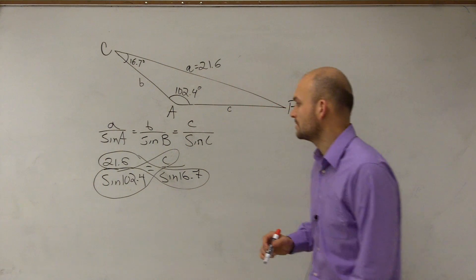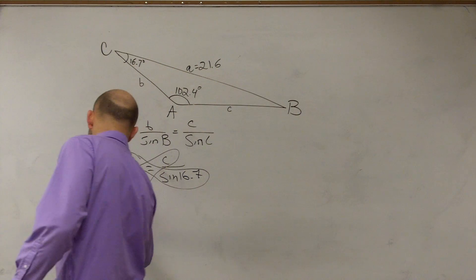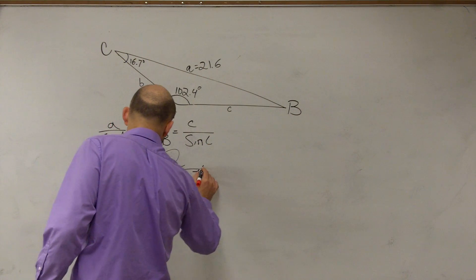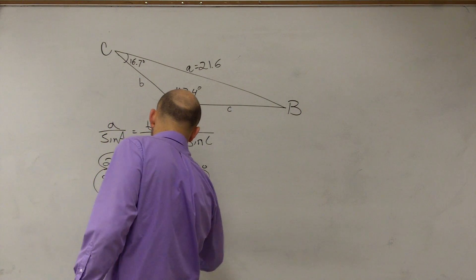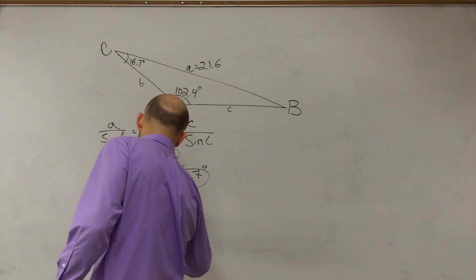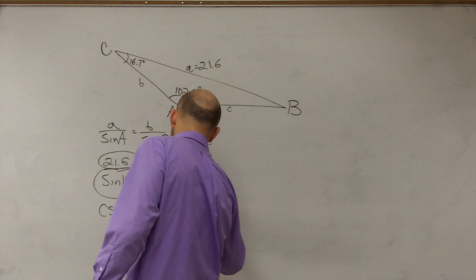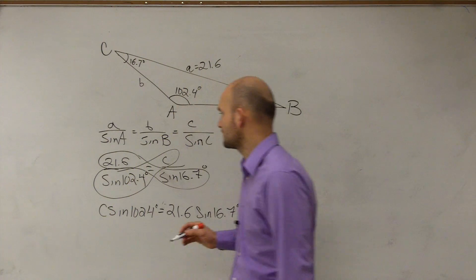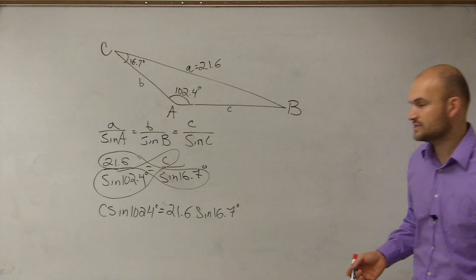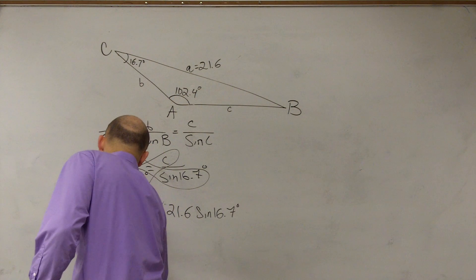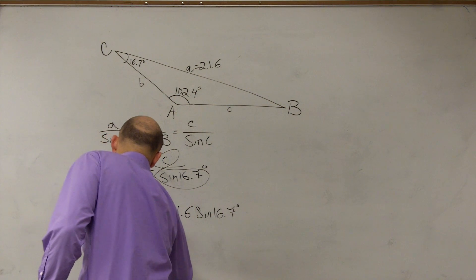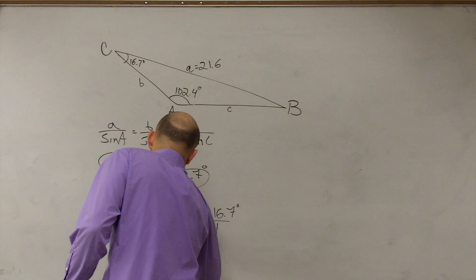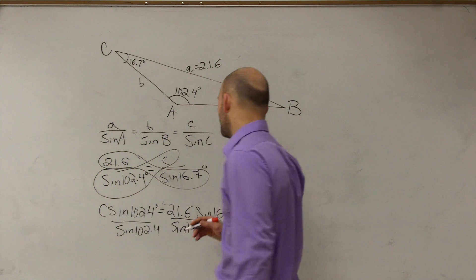So now I'm going to have C times the sine of 102.4 degrees equals 21.6 times the sine of 16.7 degrees. Then, to solve for C, we obviously now have to divide by the sine of 102.4.